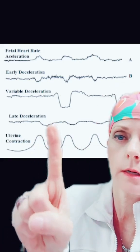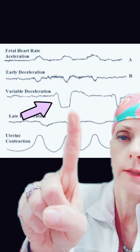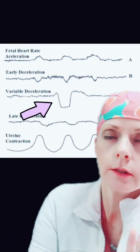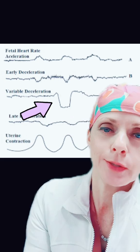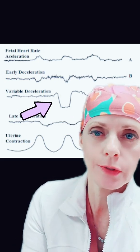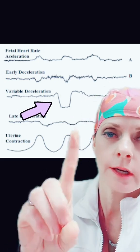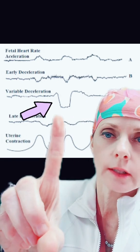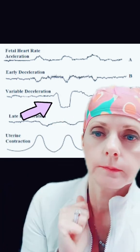This is a uterine contraction pattern, and this is an example of a variable deceleration — they can look lots of different ways. I won't go into all the criteria to classify something as a variable deceleration, but that's kind of what they look like in relation to uterine contractions.